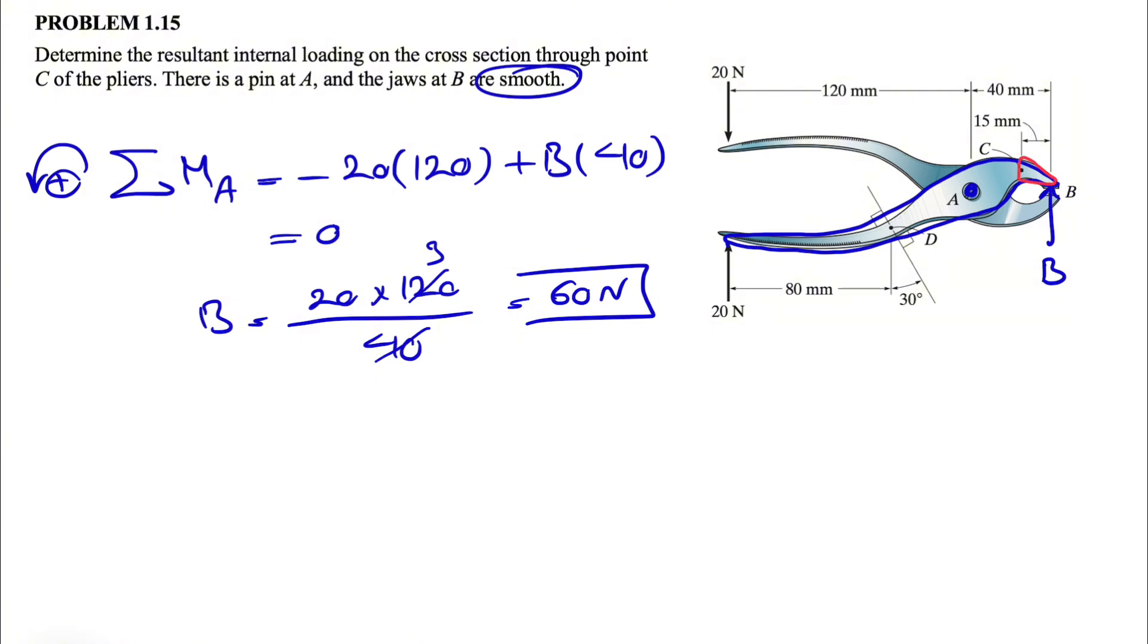And the reactions that we have in here, we can call this one the normal one NC, and one vertical to that one we can show it with VC or any other variable we want to call it. And here we're going to consider another moment, here MC, and we have to figure out all of these.